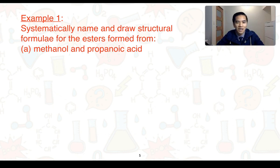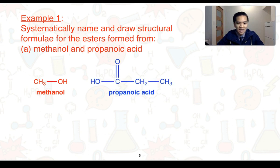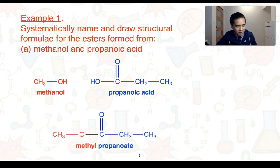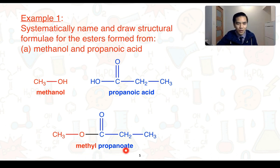For our first example, we need to systematically name and draw structural formulae for the esters formed from methanol and propanoic acid. We can see the structural formulae for our alcohol and our carboxylic acid. A water molecule is eliminated from these three atoms — that's our condensation reaction — and the oxygen and carbon join to form our ester. In terms of the name, the first part comes from the alcohol component: methanol becomes methyl. The second part, propanoic acid, becomes propanoate. So overall, the name becomes methylpropanoate. It's not necessary to have a space between the two parts of the name.